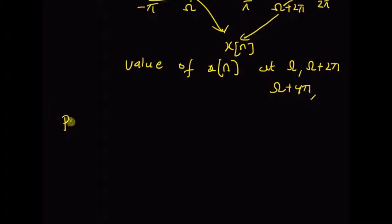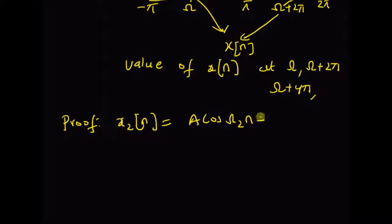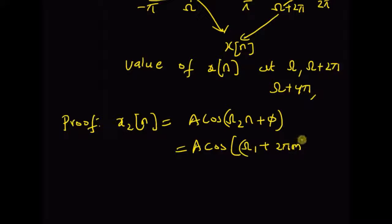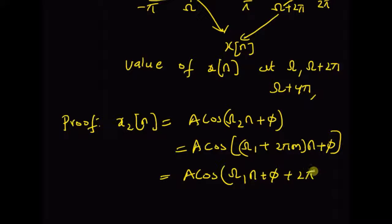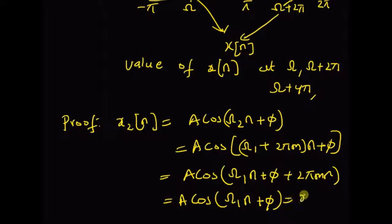We can easily prove this theorem as follows: x2 of n is equal to A times cos of omega 2 n plus phi, but omega 2 equals omega 1 plus 2πm. Using that relation, we have A times cos of (omega 1 plus 2πm) times n plus phi, which equals A cos(omega 1 n + phi + 2πmn). Since 2πmn is a multiple of 2π, it is a period of the cosine function, and therefore this equals A cos(omega 1 n + phi), which is x1 of n.